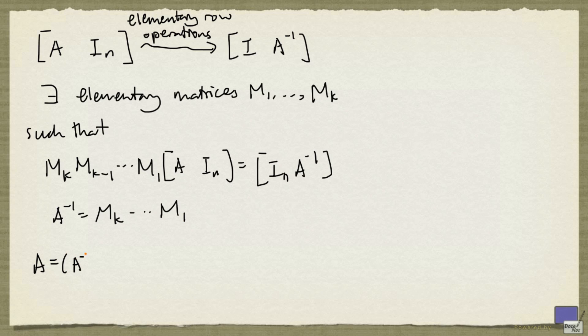But A is the same as the inverse of A inverse, so this is precisely the inverse of this product. And this can be written as the inverse of M1 times all the way up to the inverse of Mk. Notice that the order is now reversed because of the property of the inverse of a product.